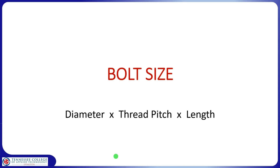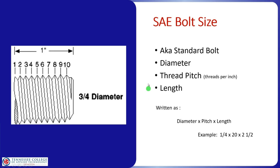When determining bolts, we look at three things: diameter, which is the thickness of the bolt; thread pitch; and length, or how long the bolt is. For an SAE or standard bolt, we use those three things — diameter, thread pitch, and length — to describe the bolt.